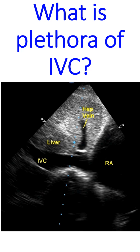IVC plethora may not occur in low-pressure cardiac tamponade, in which right atrial pressure is less than 12 mmHg. It may also be noted that during positive pressure ventilation, inspiration is generated by positive pressure, and hence the inferior vena cava expands rather than collapses during inspiration.